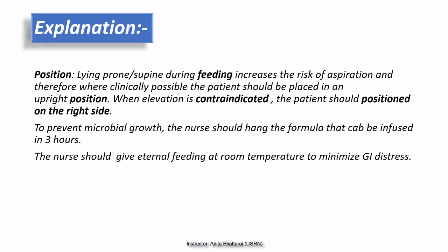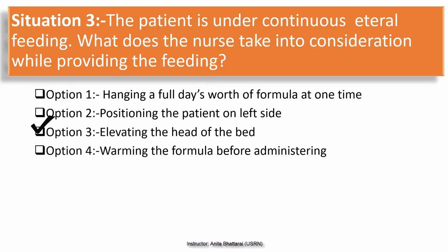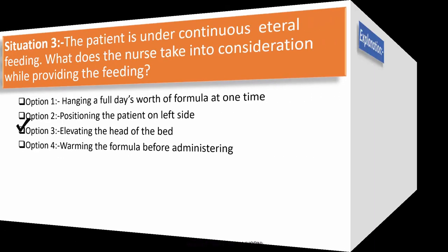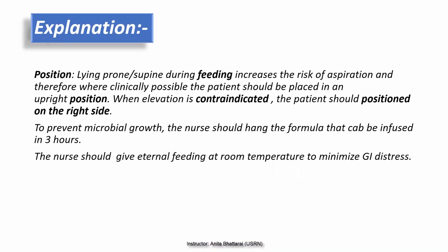The correct option is Option 3 — elevating the head of the bed — because lying prone or supine during feeding increases the risk of aspiration. The patient should be placed in an upright position to reduce aspiration risk. In clinical situations when upright positioning is contraindicated, the patient should be on the right side, which also reduces aspiration risk. Option 1 is incorrect because hanging fluid for a long period increases microbial growth risk. The nurse should give enteral feeding at room temperature to minimize GI distress, as fluid that is too warm or too cold causes distress.